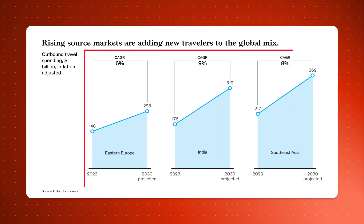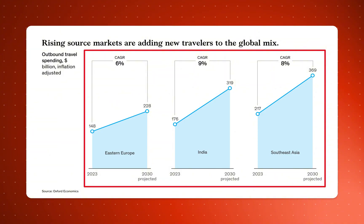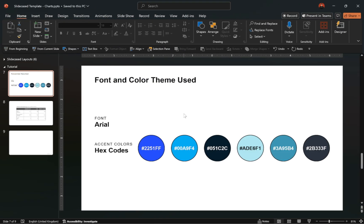First up, we have a line and area combination chart. But before we begin, here are the fonts and color themes I'll be using throughout this video. If you'd like to use these exact themes, click the video link in the top right corner to learn how to create and customize fonts and color themes in PowerPoint.